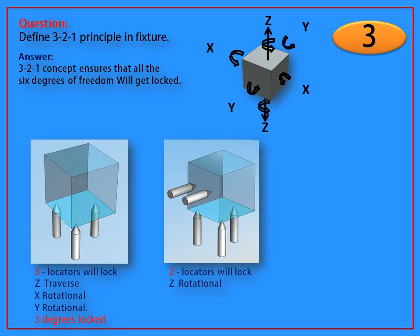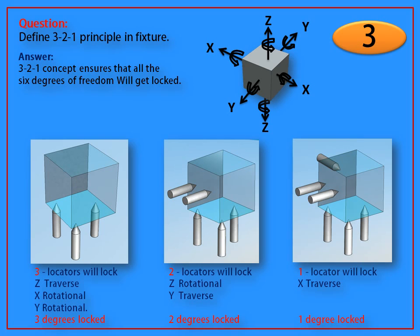Then two locators will lock Z rotational and Y traverse. And at last, one locator will lock X traverse.